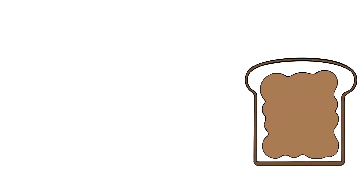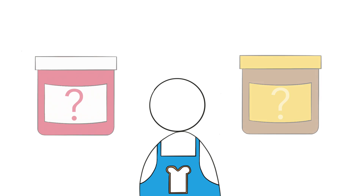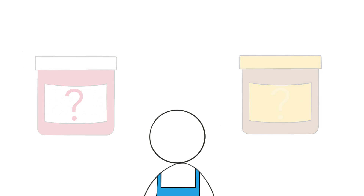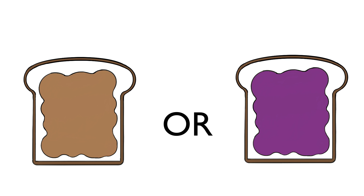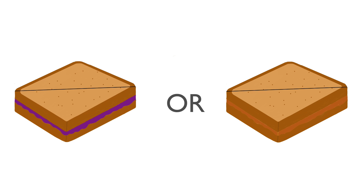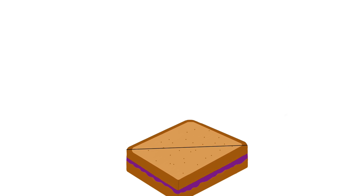If the shop told you they're not sure what ingredients they have in stock, you might try your luck and order a peanut butter OR jelly sandwich. You could end up with two completely different sandwiches — a peanut butter one or a jelly one — or you might just end up with one sandwich.